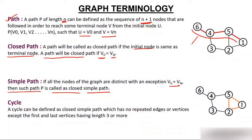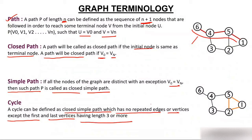A cycle is defined as a closed simple path with no repeated edges or vertices, except for the first and last vertex, and having a length of three or more. You cannot make a cycle with only two edges. For example, nodes 5, 1, and 2 form a cycle in this graph.